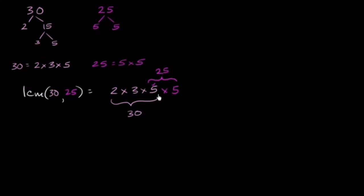So let's just multiply it out. This is essentially the prime factorization of our least common multiple. And this is equal to 2 times 3 is 6, 6 times 5 is 30, 30 times 5 is equal to 150.